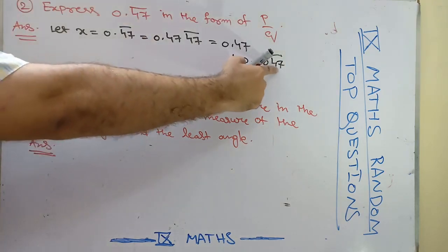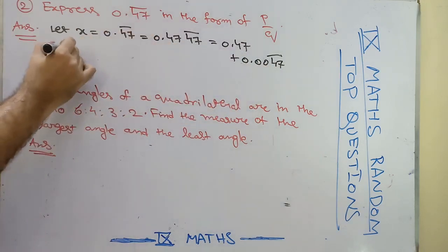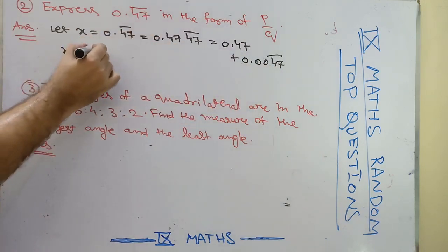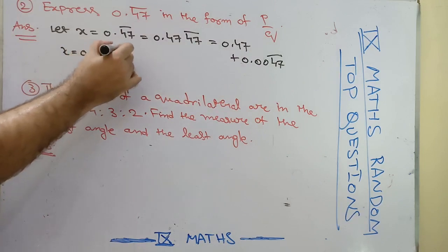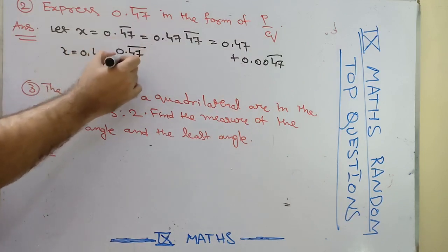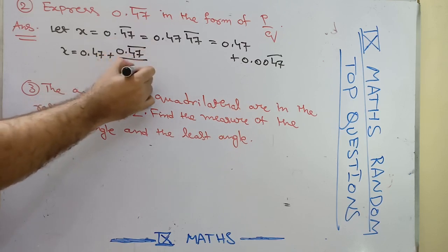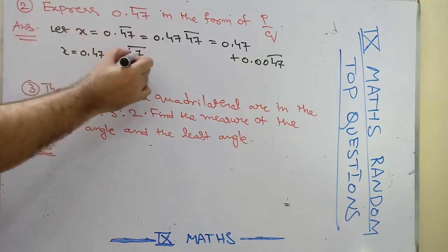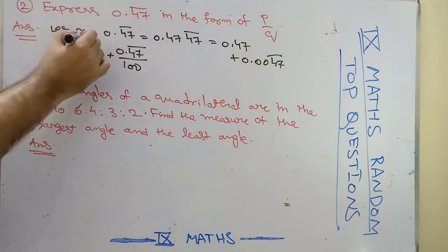Now concentrate on this part, 0.0047 bar. x is equal to 0.47 plus 0.47 bar divided by 100. Let us write like this. But we assume that 0.47 bar is nothing but x.